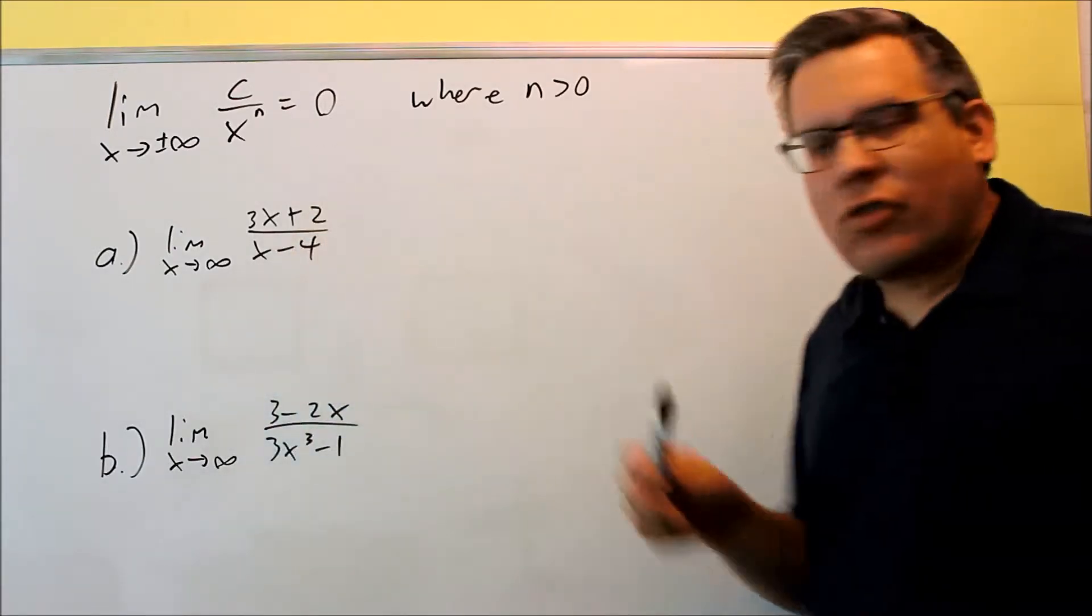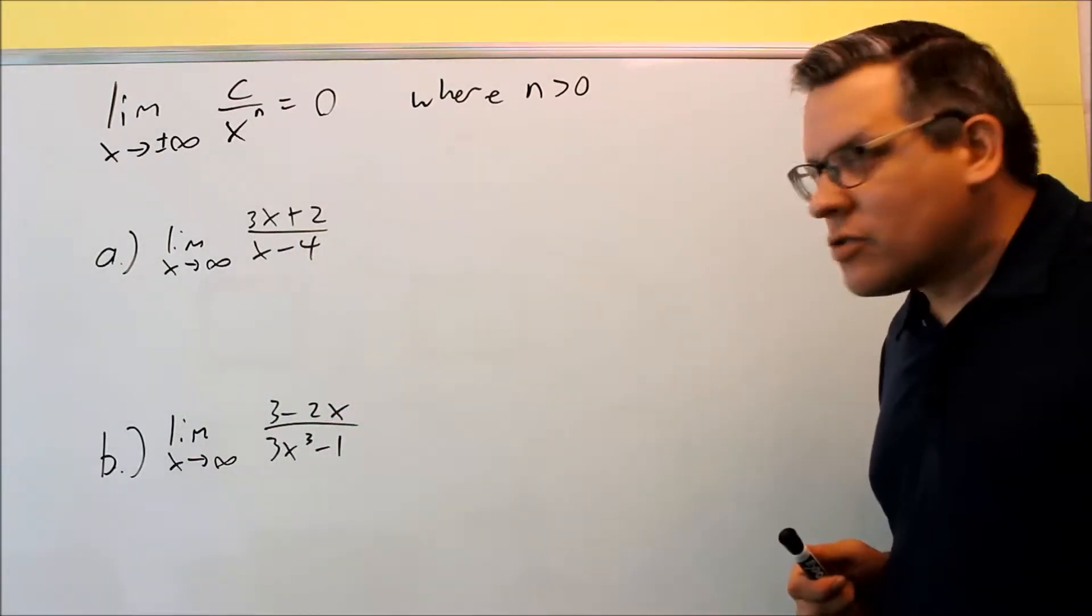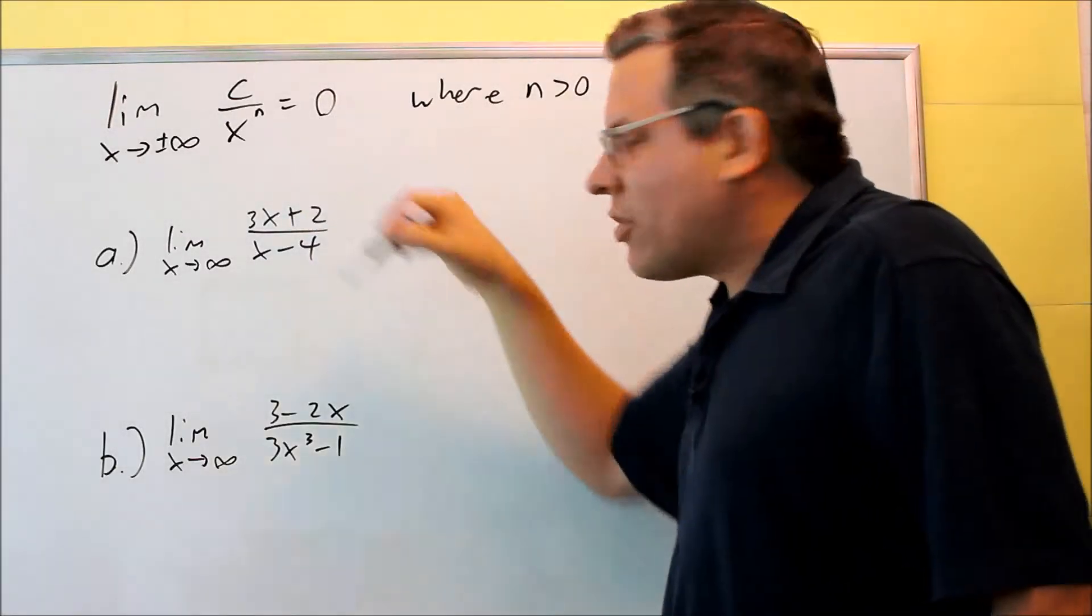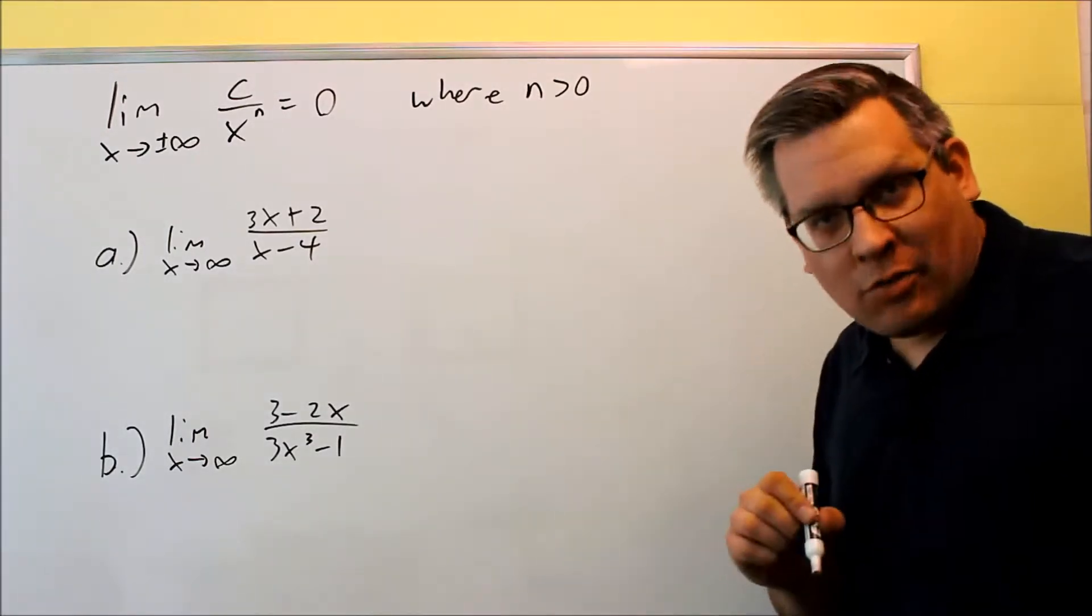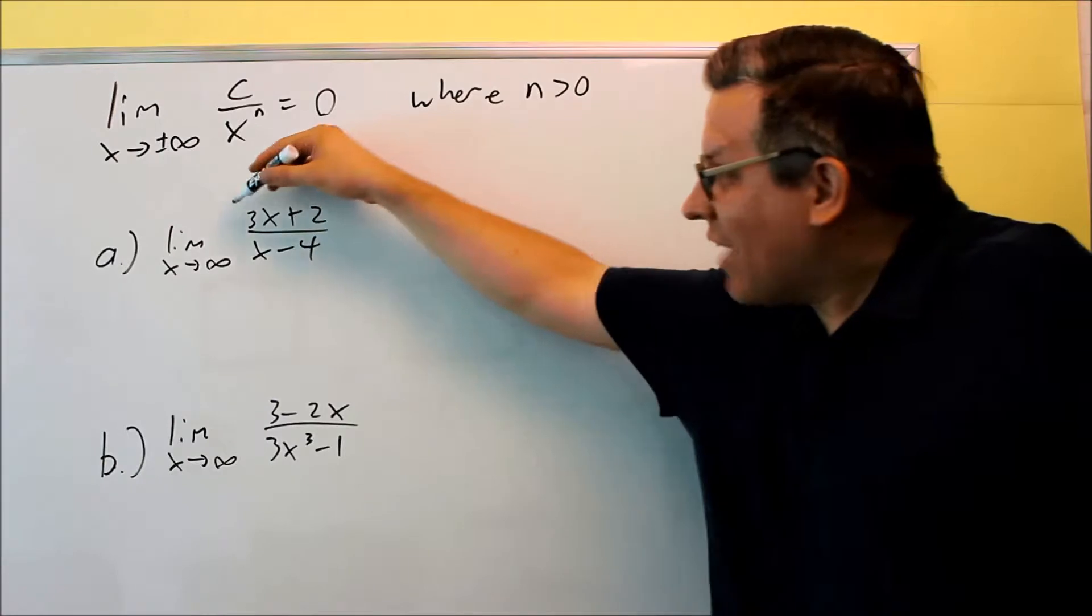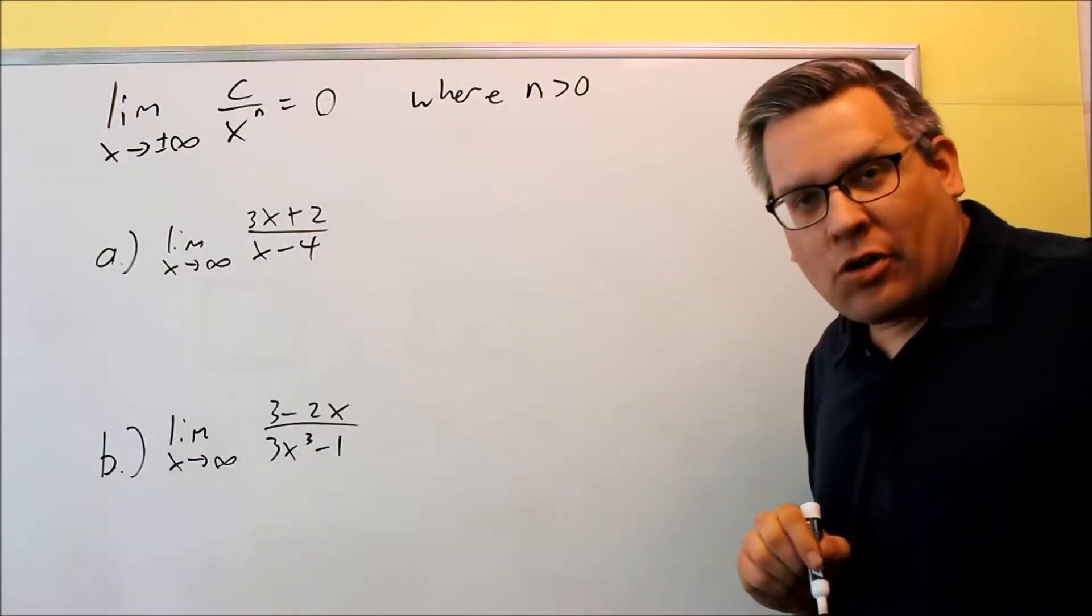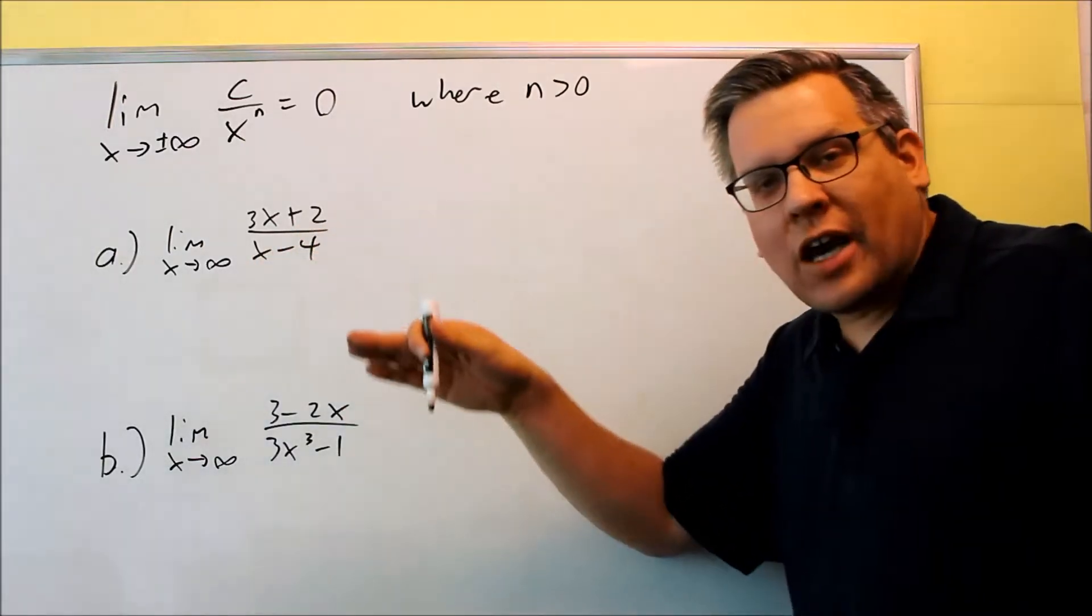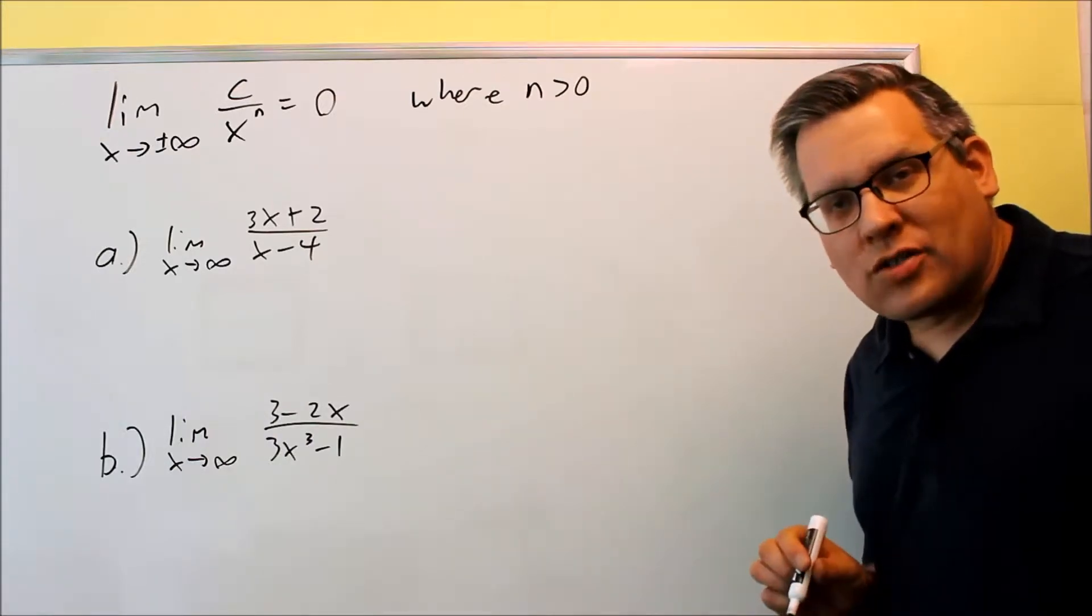So in this case, I have X is going to be going to infinity, and here's how you're going to be answering these. What you're going to do is you're going to take and you're going to divide everything in the top and bottom by the highest power of the bottom. So you're dividing everything top and bottom by the highest power in the denominator. That's the process for doing these kind of problems, and you're only going to do that if you have it going to infinity or negative infinity.